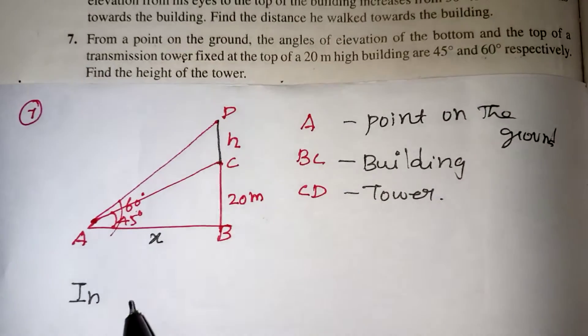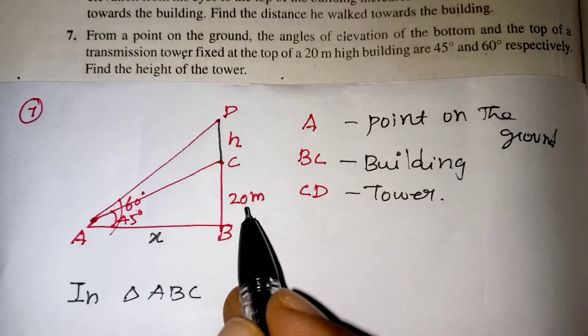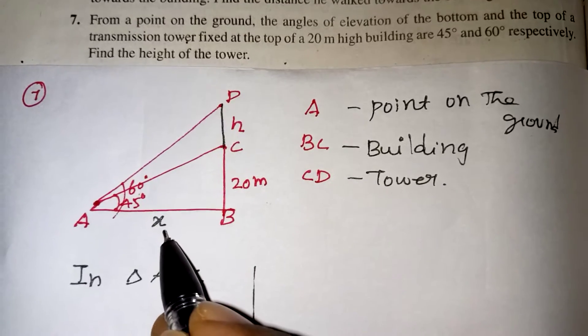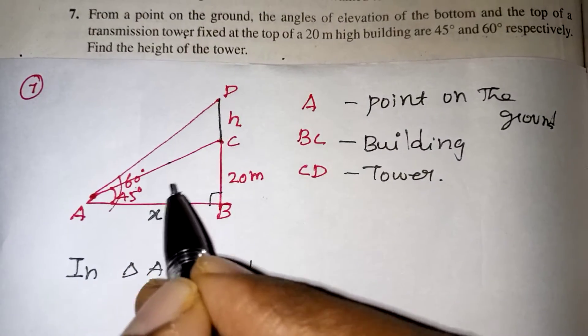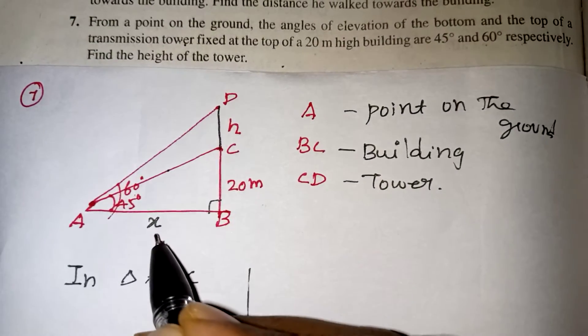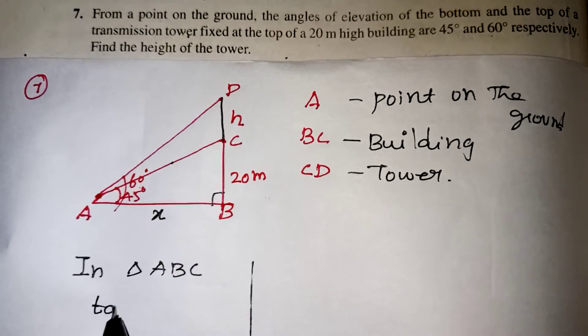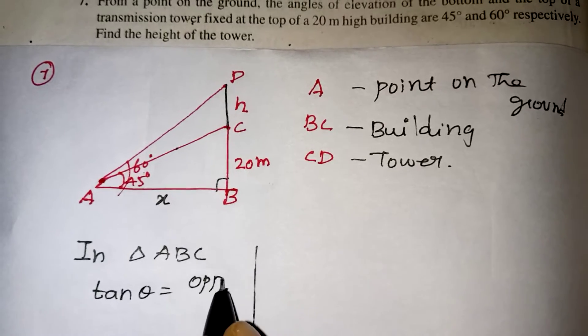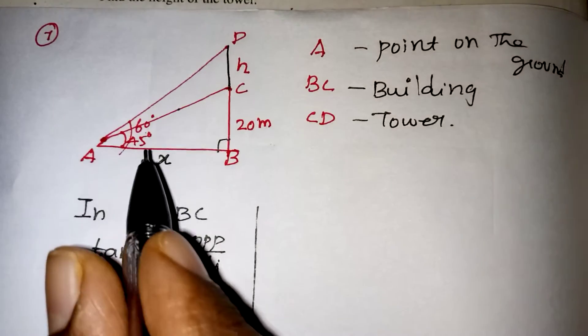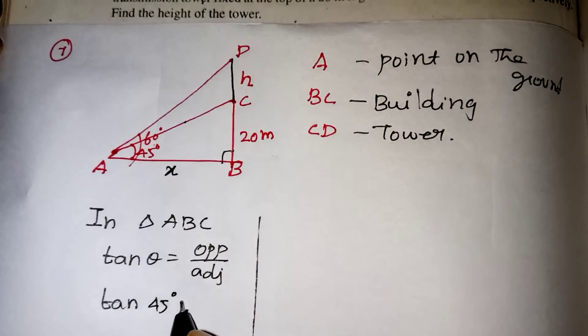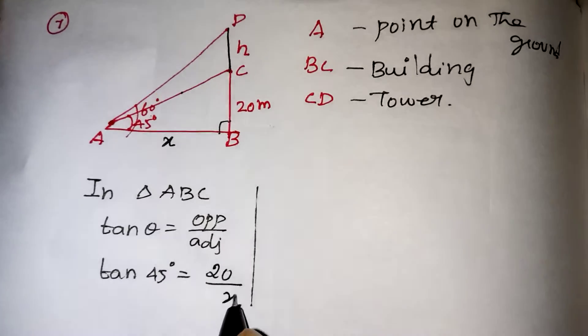In triangle ABC we have opposite side is given, adjacent side we don't know. This is a 90 degree, this will be the hypotenuse that we don't want. So the opposite and adjacent side, tan theta will come. So tan theta is equal to opposite by adjacent. Now tan theta value is given as 45 degree, tan 45 degree is equal to opposite side is 20 by adjacent side is x.